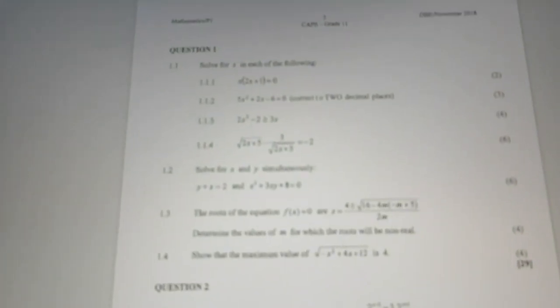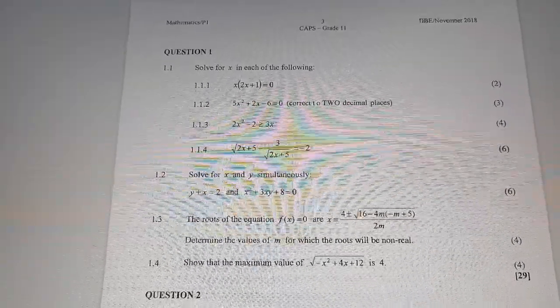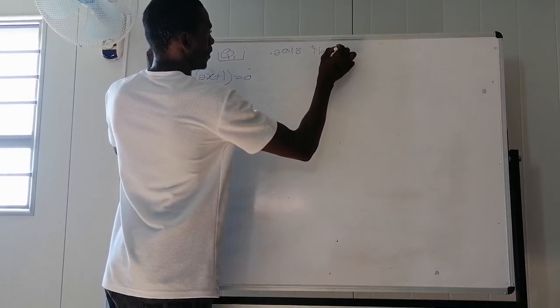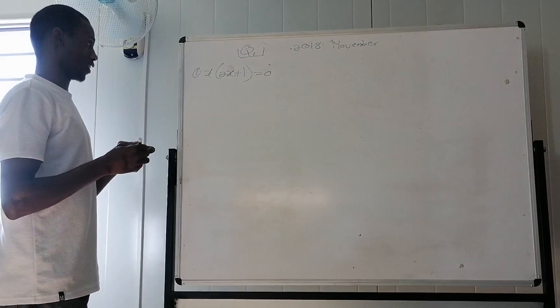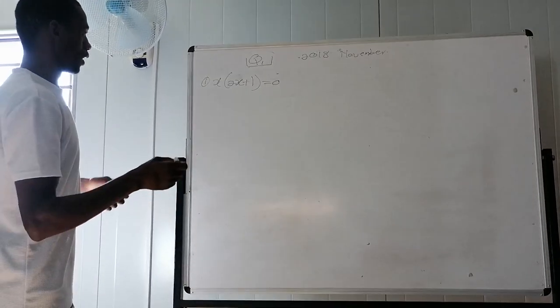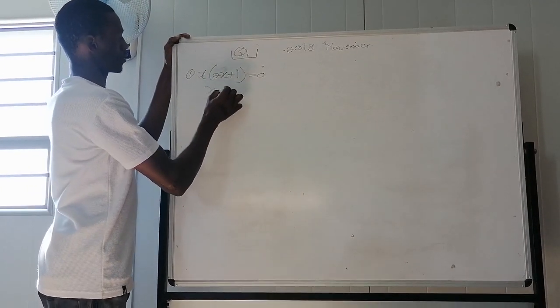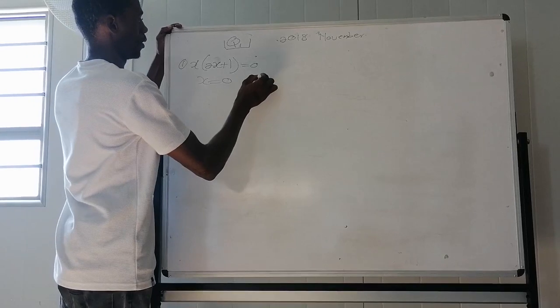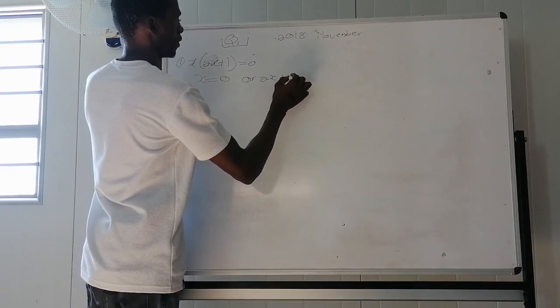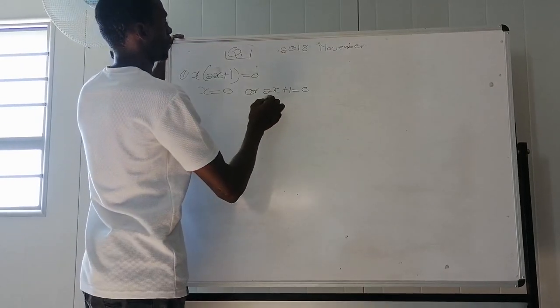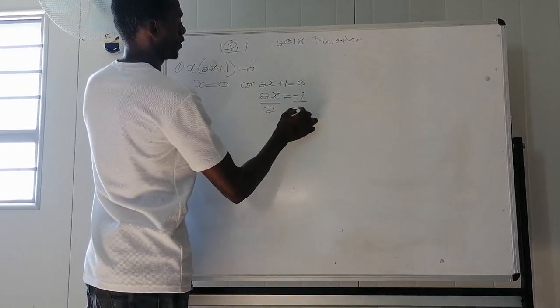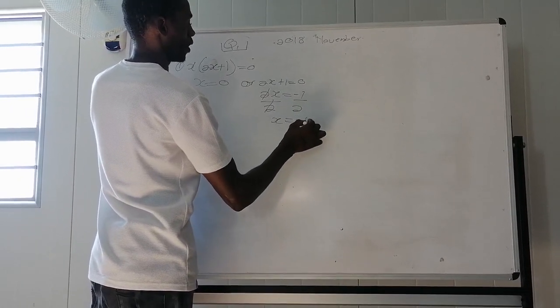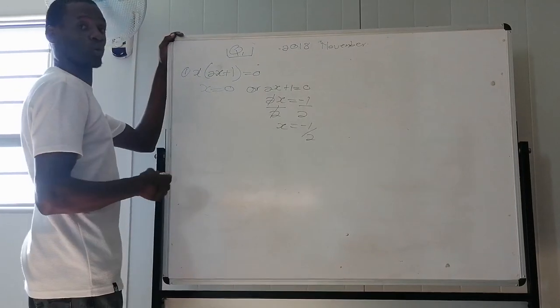It says x into 2x plus 1 equals 0. This is a 2018 November paper. So here automatically they are already factorized for you. This one is very simple guys. x is equal to 0 or 2x plus 1 is equal to 0. So you transpose the 1. You say 2x is equal to negative 1. Then you divide outside by 2. Then this will cancel this. You are left with x is equal to negative 1 over 2. This is the two marks guys. Very easy.